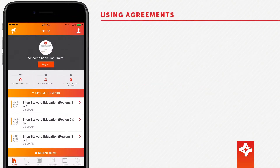Using the myRNU app, you can quickly access your collective agreement from anywhere. If you are wondering what the agreement says about overtime, seniority, or vacation, for example, simply look it up. You'll have your answer in seconds.